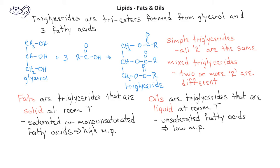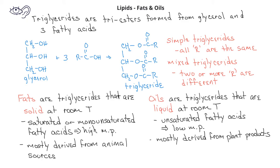Many fats are derived from animals, whereas oils typically come from plant products. In nature, fats serve as an insulation and energy source for animals. Unlike glycogen, which is a polysaccharide and is very highly oxidized, fats are less oxidized and provide a much slower source of energy production in living things.